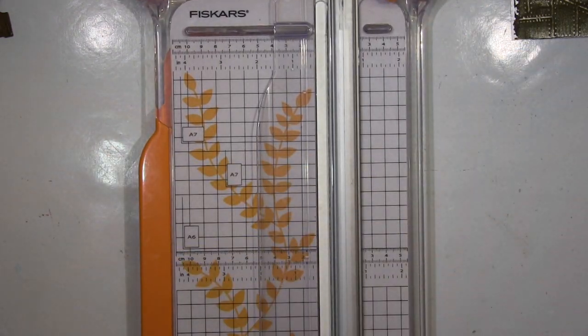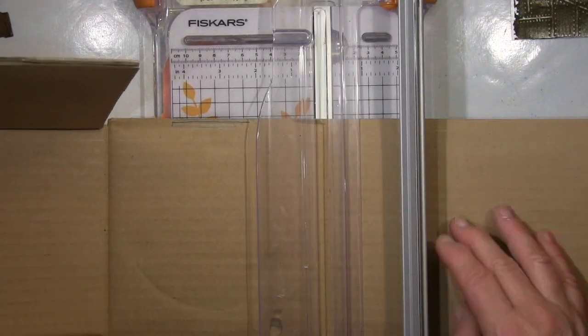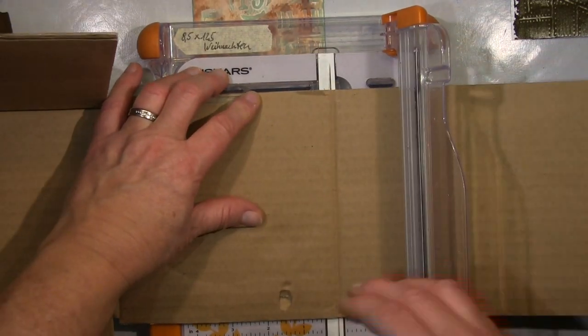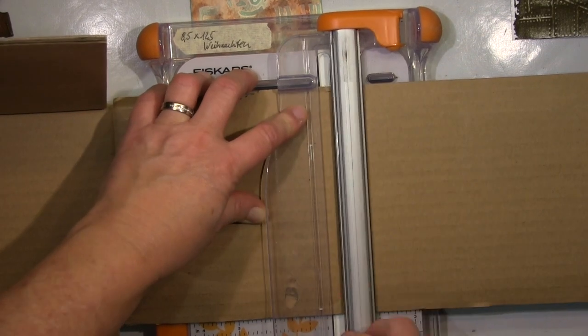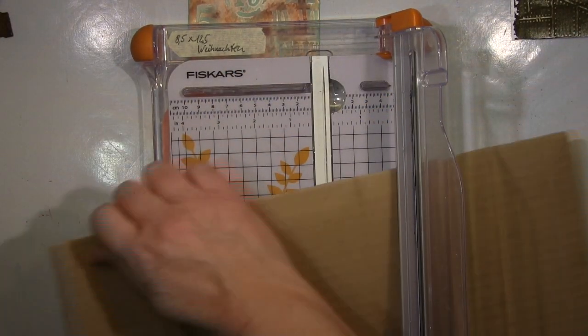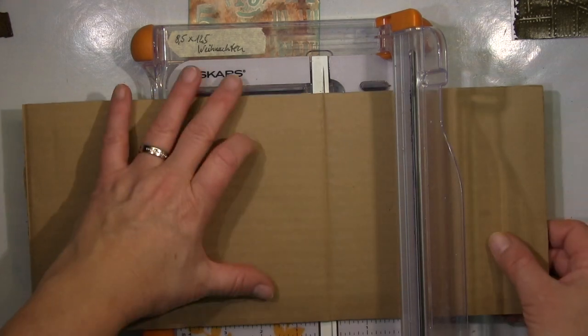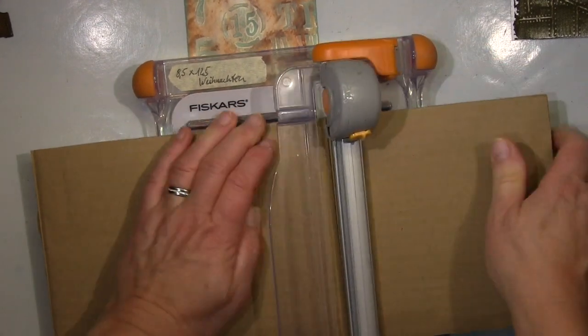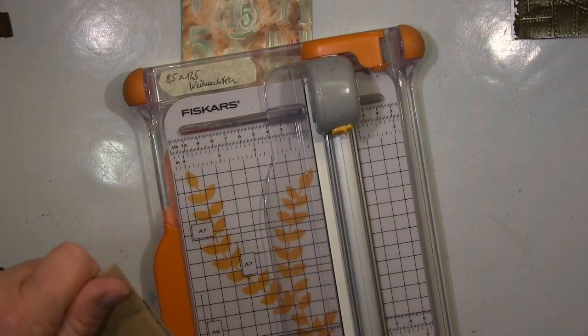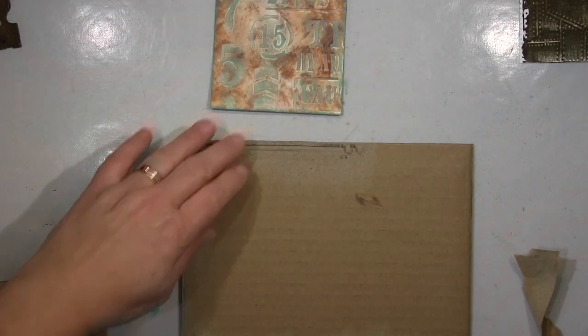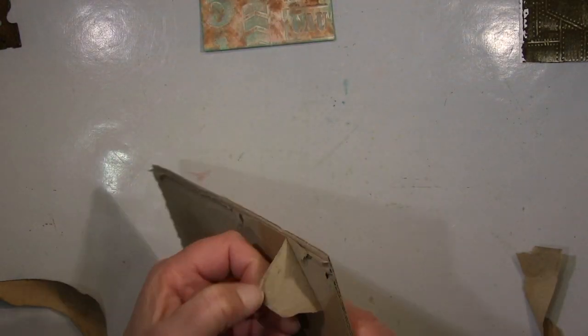Das musste jetzt nicht so exakt sein, mit Bürstchen oder mit Schwämmchen aufzutragen, einfach mit einem Tuch in den Nachfüller rein und gut ist. So, dann habe ich jetzt diese dicke Pappe, ich habe ein Paket bekommen und wenn das so diese Doppelpappe ist, das liebe ich einfach.